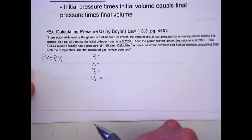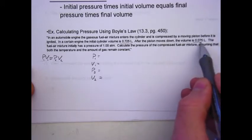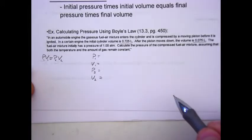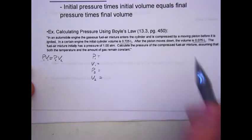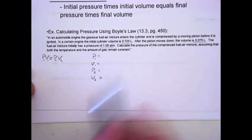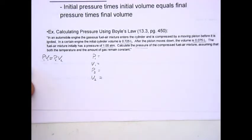After the piston moves down, the volume is 0.075 liters. The fuel-air mixture initially has a pressure of one atmosphere. Calculate the pressure of the compressed fuel-air mixture, assuming that both temperature and the amount of gas remains constant.